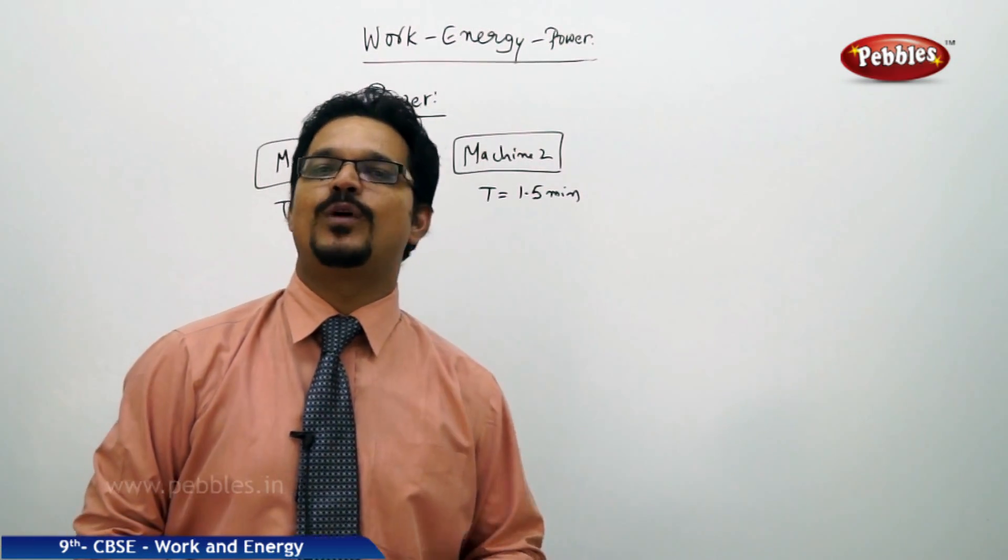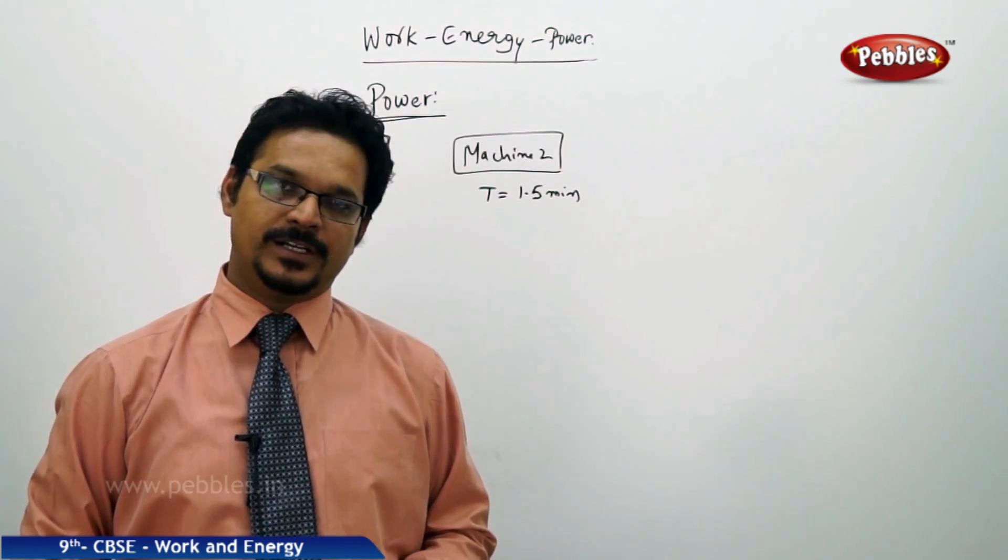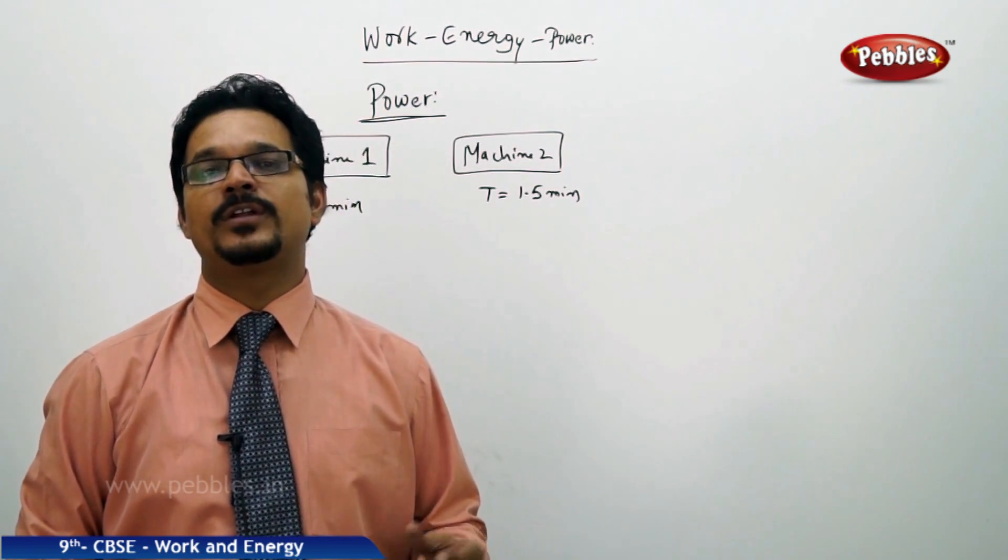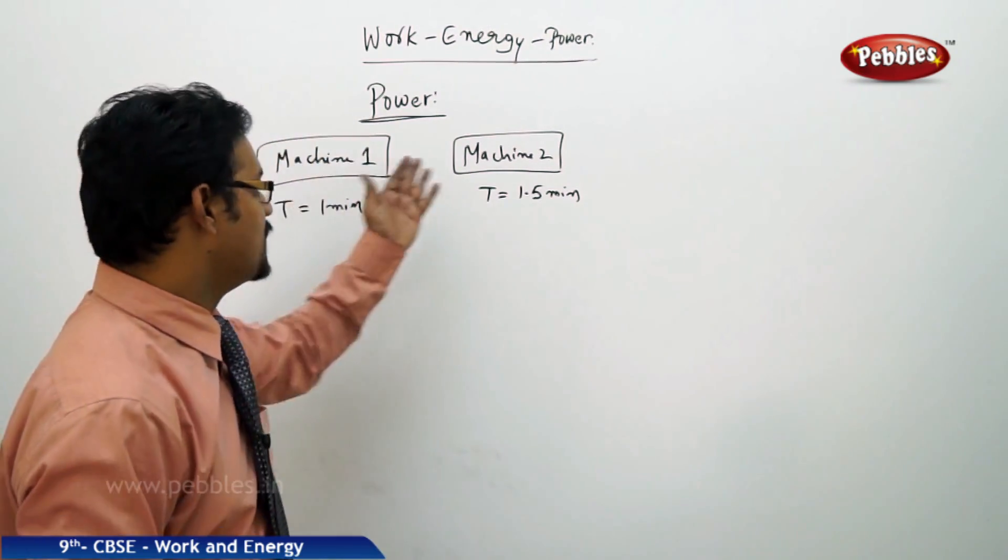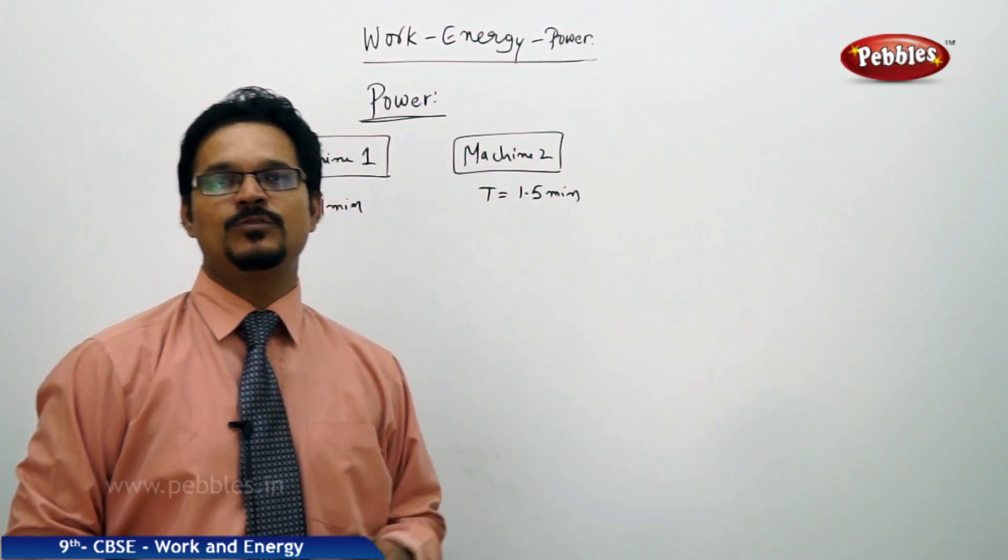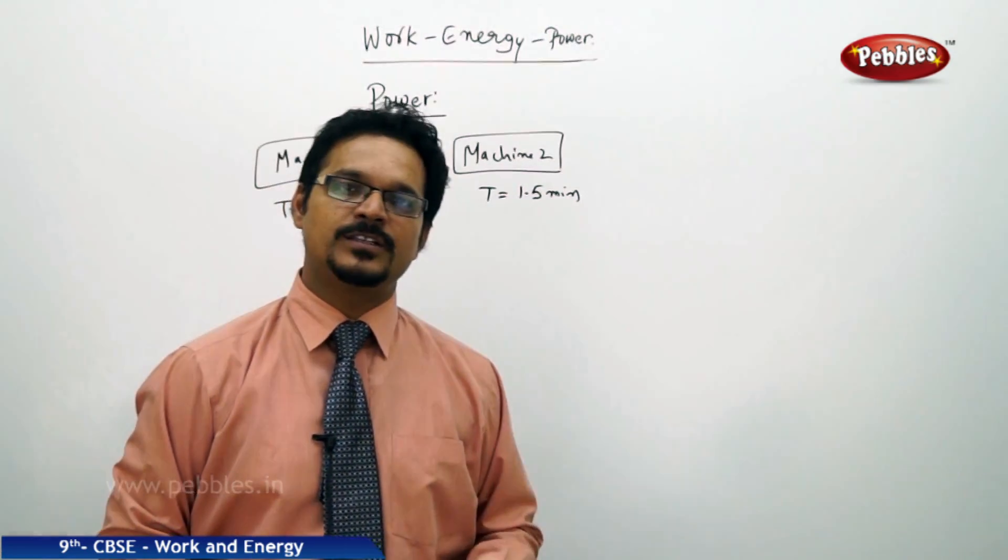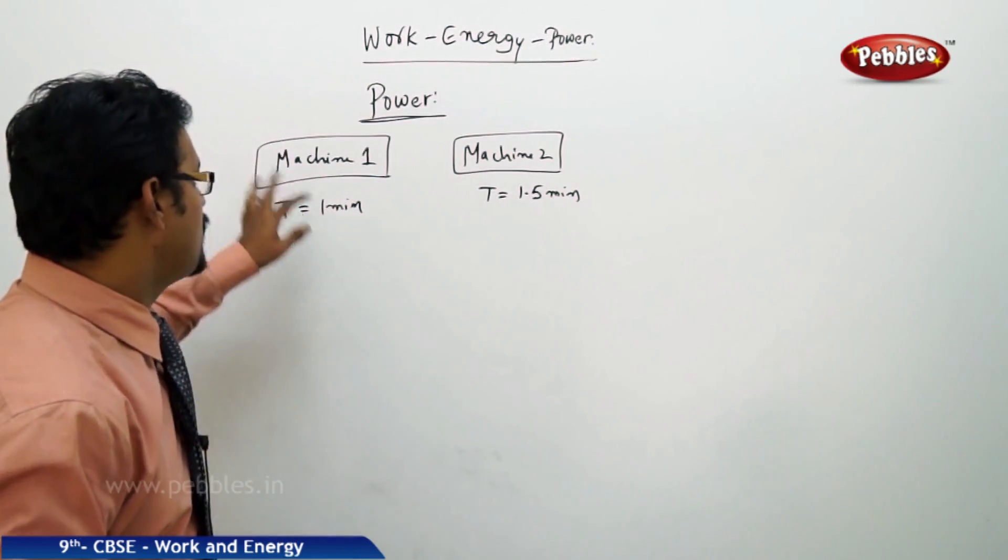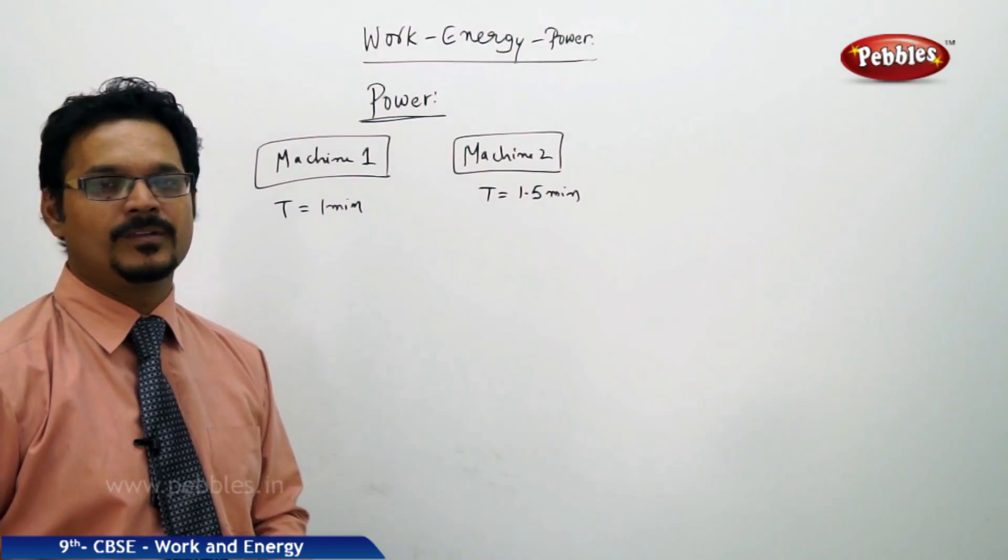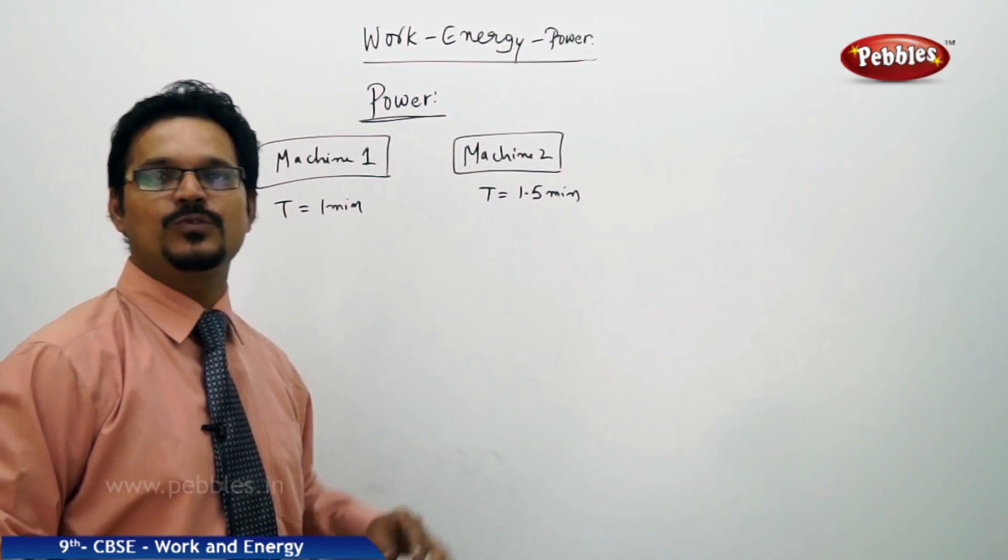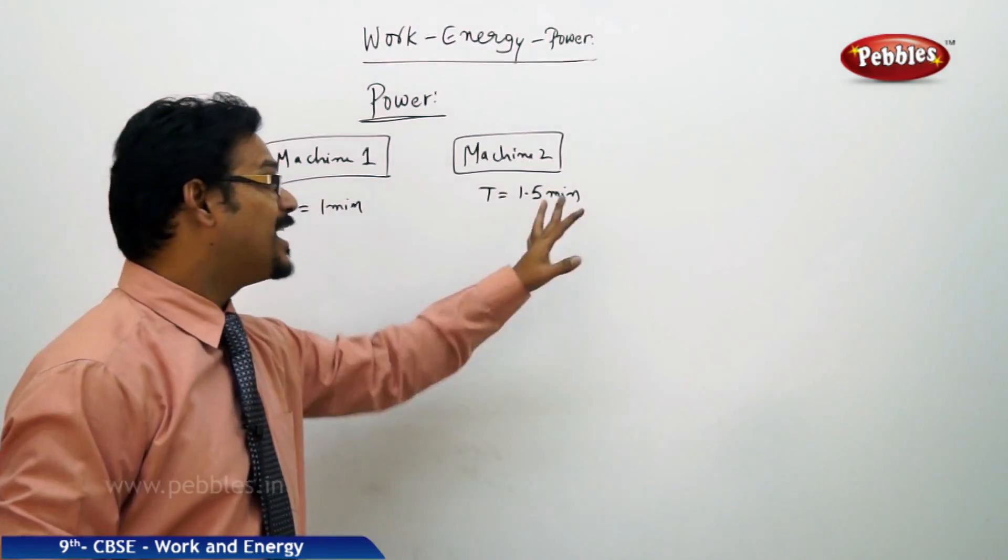So far we learned about what is work, what is energy, how work and energy are related, and especially we learned about kinetic energy and potential energy. Now, you are given two machines. These two machines are doing some X type of work. The thing is, the difference is machine one performs the work in one minute, whereas machine two performs the same work in one and a half minutes.